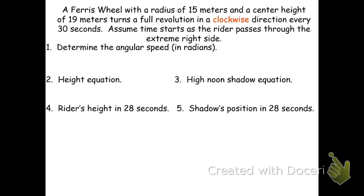Here's another example where the ferris wheel turns clockwise. The wheel has a radius of 15 meters and a center height of 19 meters, making a full revolution clockwise every 30 seconds. Because it's going clockwise, the angle is negative. Instead of 2π in 30 seconds, we say −2π in 30 seconds, giving b = −2π/30 = −π/15 radians per second.